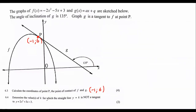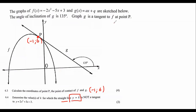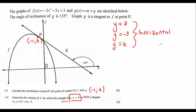Question 6.4 says determine the values of K for which the straight line — be careful here. When I looked at this earlier I nearly got caught out. It says the straight line, and I thought they were talking about this straight line, but they're not. They're talking about the straight line y equals to K. We should remember that y equals to any number is a horizontal line. They're asking us to determine the value of K for which this horizontal line is not a tangent to the graph.